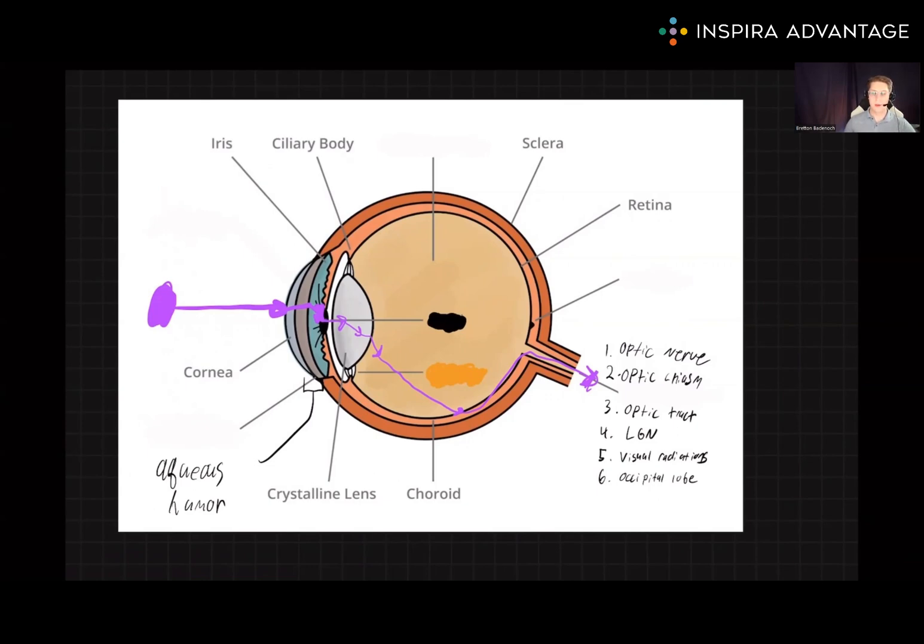In our next video on the eye, we're going to focus on how light causes nerve impulses, the difference between rods and cones, and how to treat poor vision. Thank you so much for watching our first video on eye anatomy, and I will see you next time.